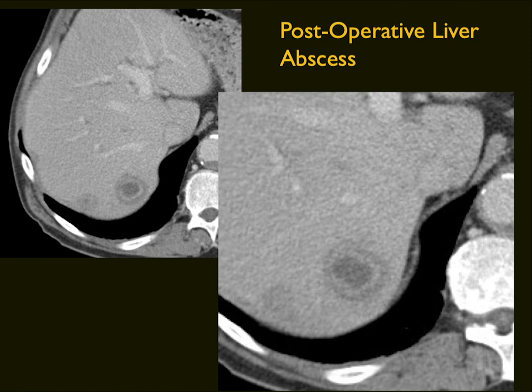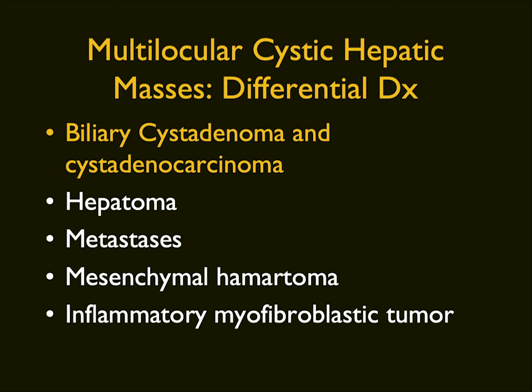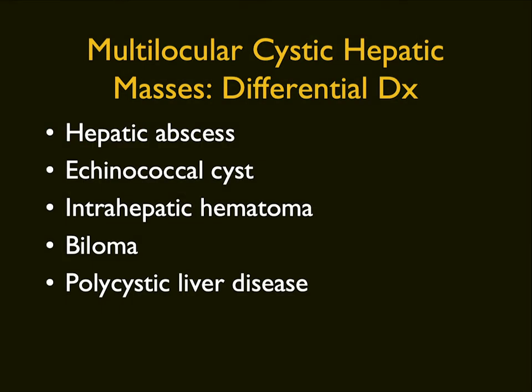Sometimes it's hard without a history, looking only at the films, to say what something is. Could this be a met? Absolutely — this patient did have a pancreatic cancer. But this was actually an abscess, just four weeks post-surgery. Post-operative abscesses can fool you, particularly a few weeks or months out when you're suspecting tumor, not abscess. Obviously fluid and air bubbles make it less difficult. Biliary cystadenomas and cystadenocarcinomas, multiple abscesses, echinococcal cysts, hematoma, biloma, and polycystic disease all fit in the category of cystic lesions.